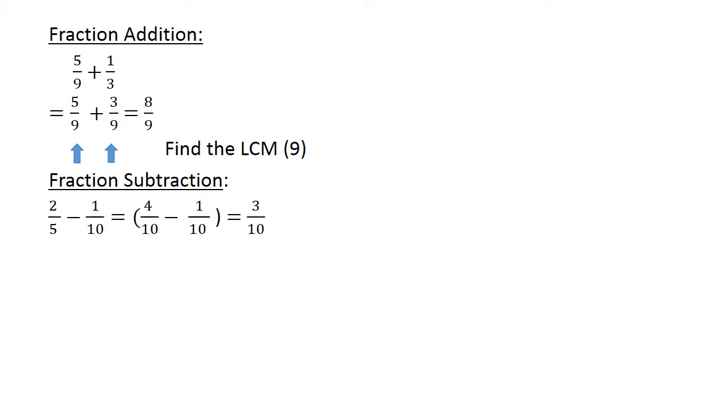Fraction subtraction. 2 over 5 minus 1 over 10 is equal to 4 over 10. You find the lowest common multiple first. And then 4 over 10 minus 1 over 10 is equal to 3 over 10.